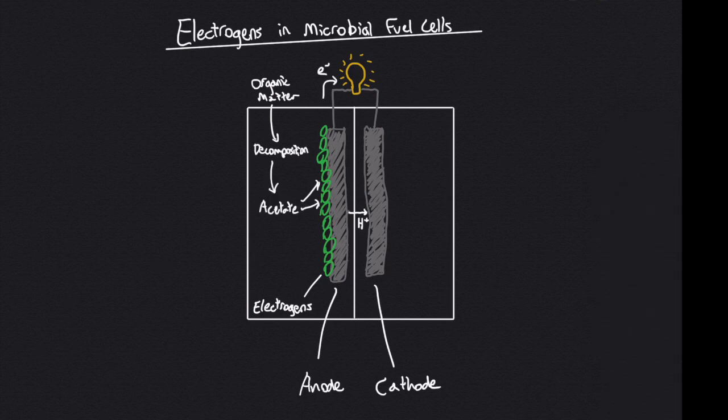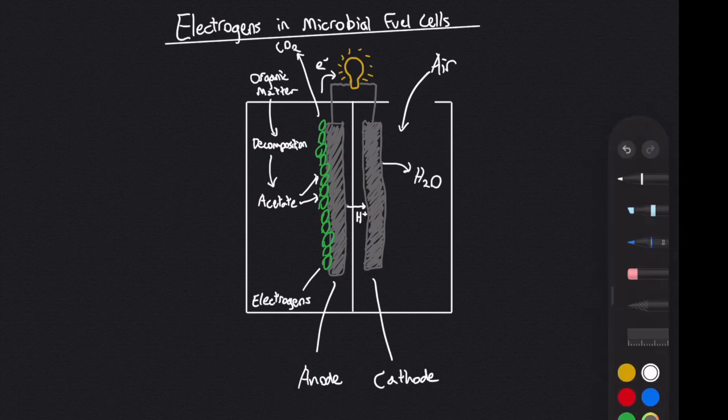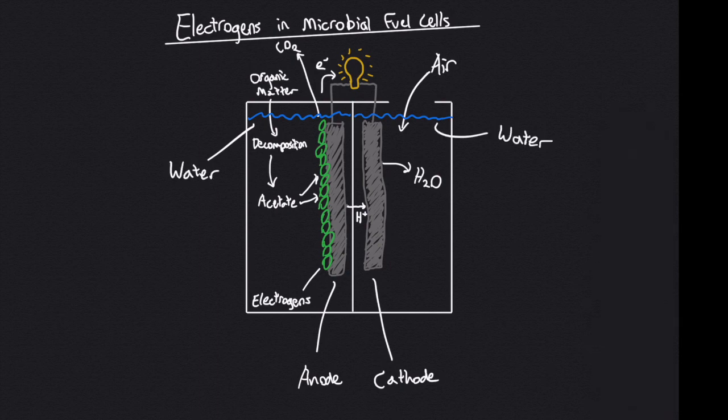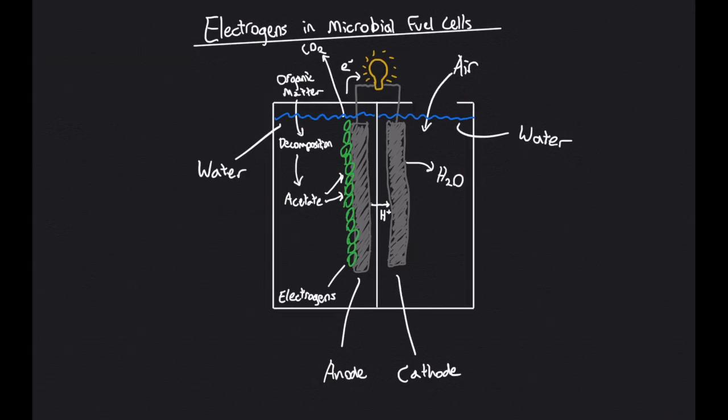When an anode is present in a cell containing an electrogen, such as Geobacter sulfurreducens, it acts as a sink for electrons. The electrogens break down organic matter and donate electrons to the anode in the process. These electrons generate an electric current, and the net effect is that we have created electricity from organic matter, all thanks to the electrogens.